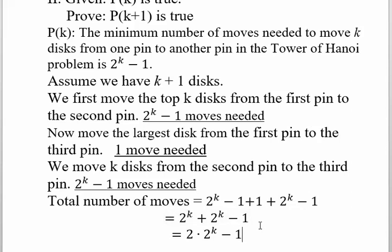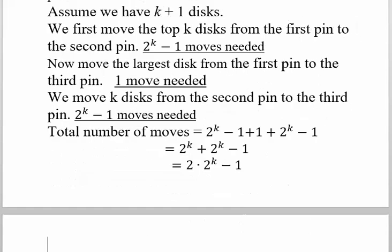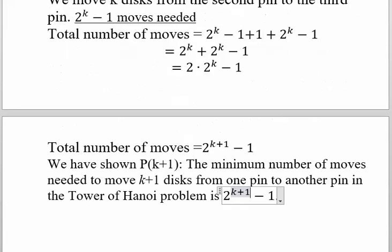2^k plus 2^k is 2 times 2^k. Now what's the next step? 2 times 2^k is 2^(k+1). And we have the minus 1 term. This is precisely what we wanted and we have established statement P(k+1). The minimum number of moves needed to move k+1 disks is 2^(k+1) - 1.